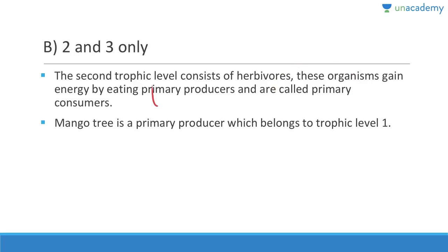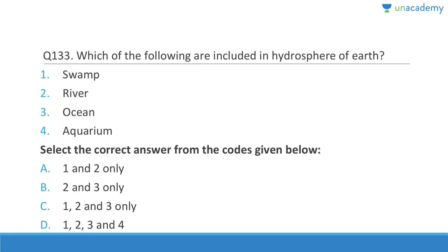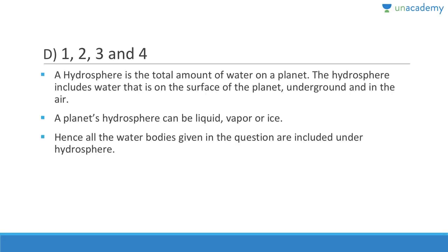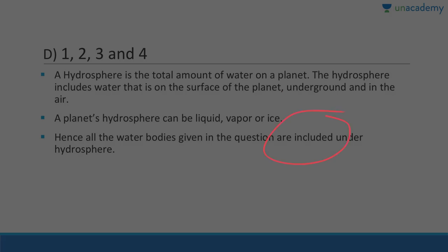Question 133: The hydrosphere includes all water bodies — swamps, rivers, oceans, and aquariums. The biosphere is where life exists across the hydrosphere, atmosphere, and lithosphere. The hydrosphere is the total amount of water on a planet, including surface, underground, and above-ground water in liquid, vapor, or ice form. All water bodies given are included in the hydrosphere.